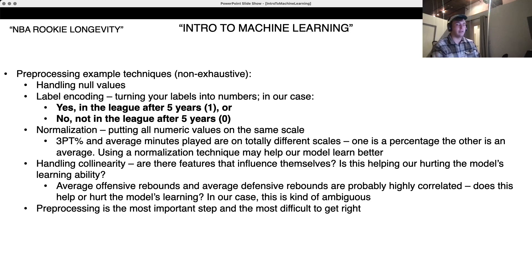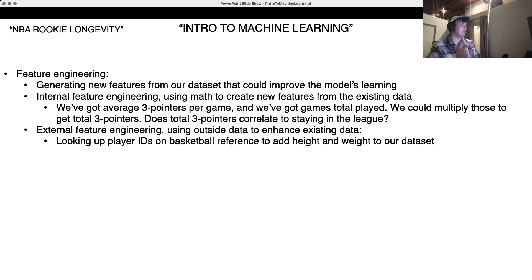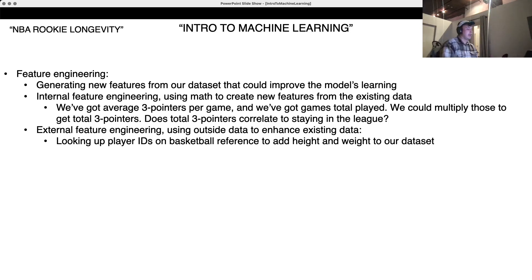Preprocessing is probably the most important step, and also the most difficult to get right. Everybody does it differently, and you're probably going to do it five or six times before you get it right. Feature engineering is just generating new features from our existing data set, and this can improve the model's learning. For example, we've got three-pointers per game and total games played — if we multiply those together, we get total three-pointers for the season. Perhaps total three-pointers correlates more highly to staying in the league than three-pointers per game. We could also do external feature engineering — connecting to basketballreference.com to get player height and weight and adding those to our data set.